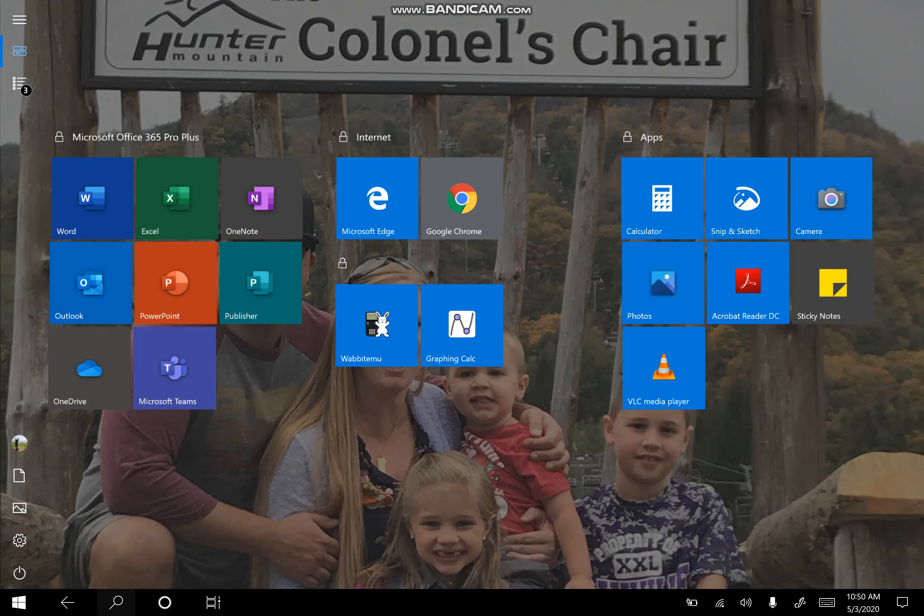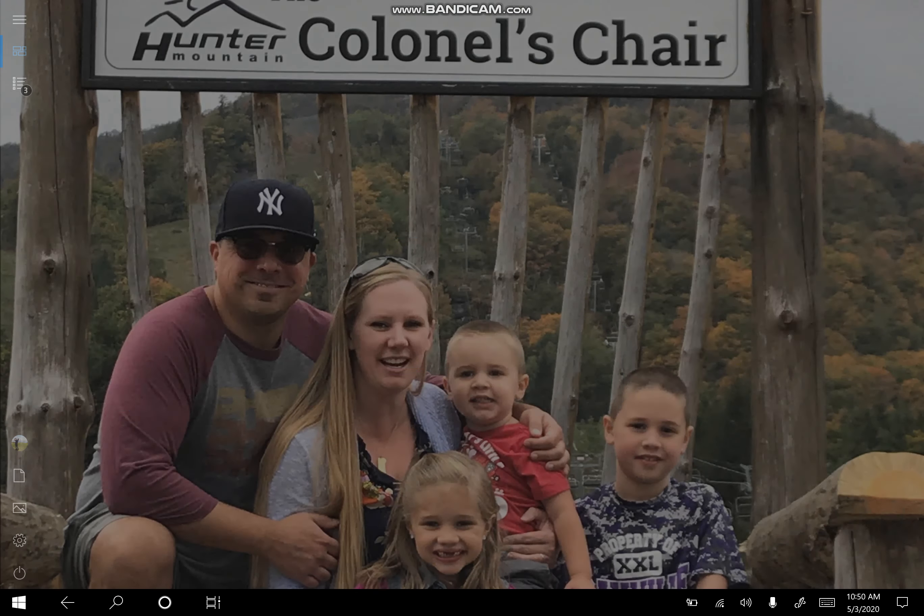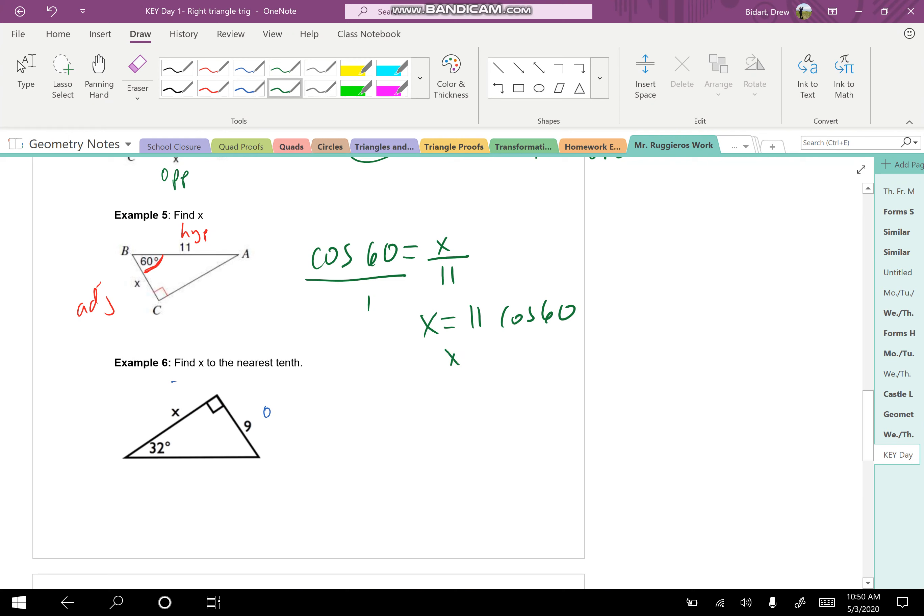So now I'll go and I'll look at my calculator. So if I do 11 cos 60 and hit enter, you're at exactly 5.5.